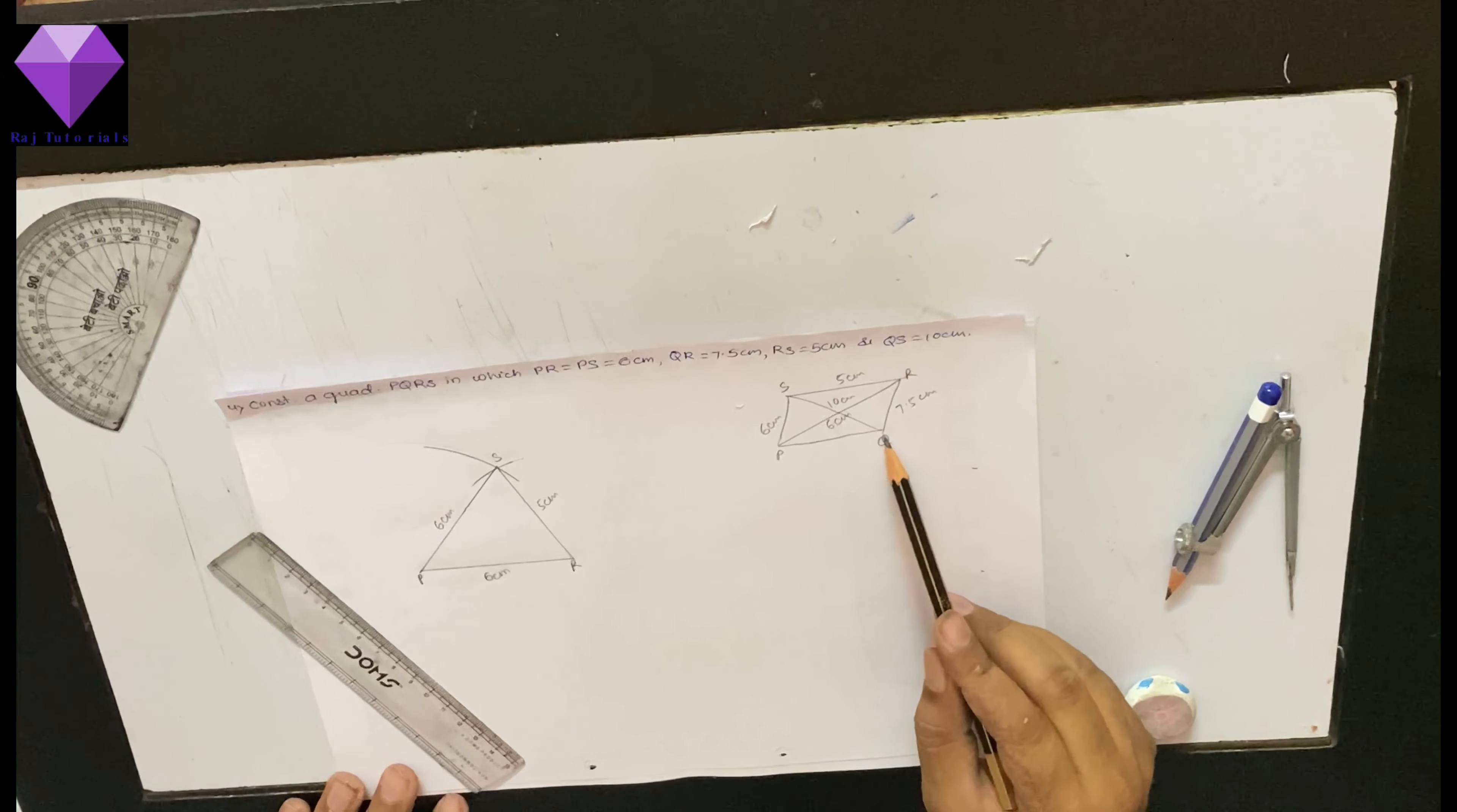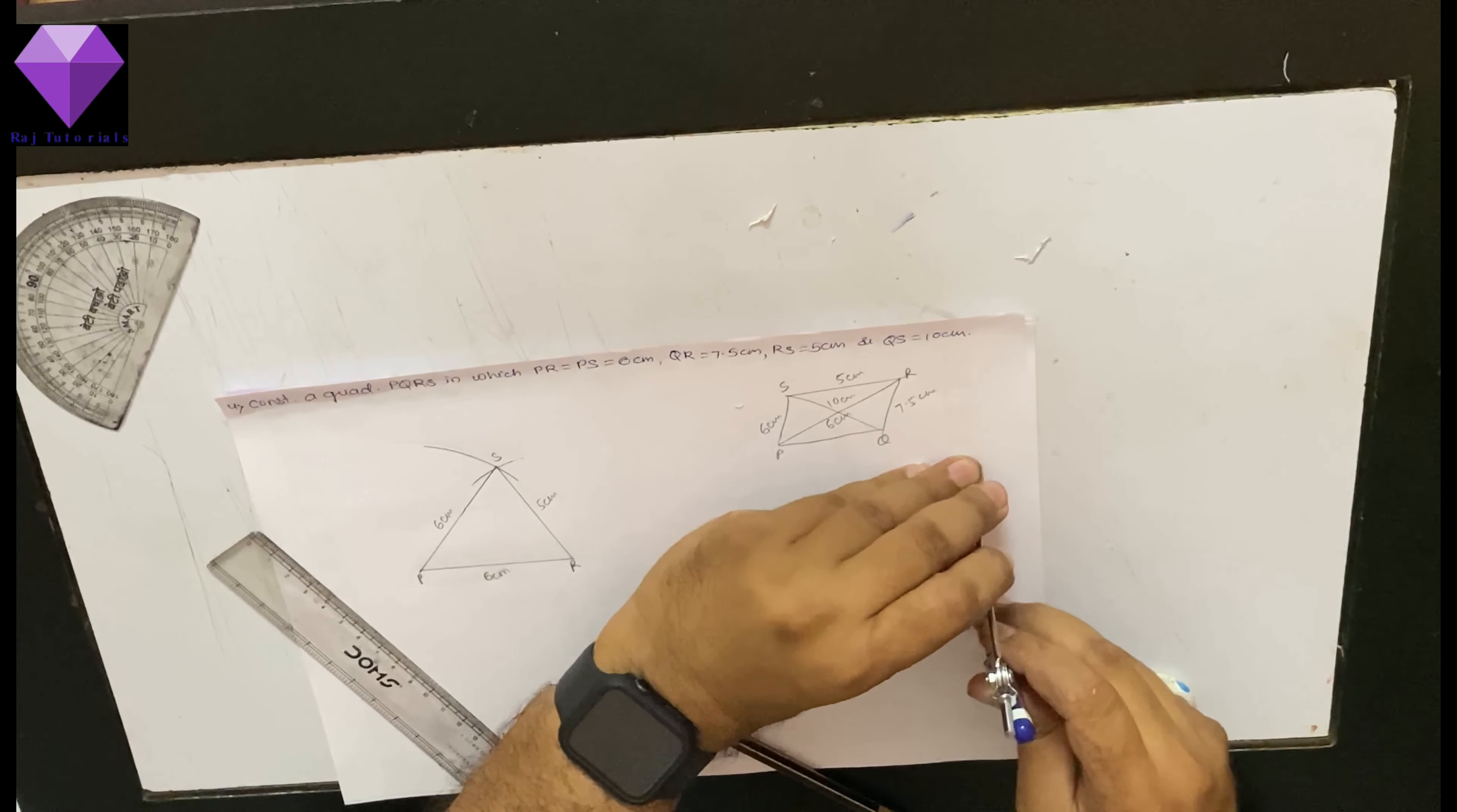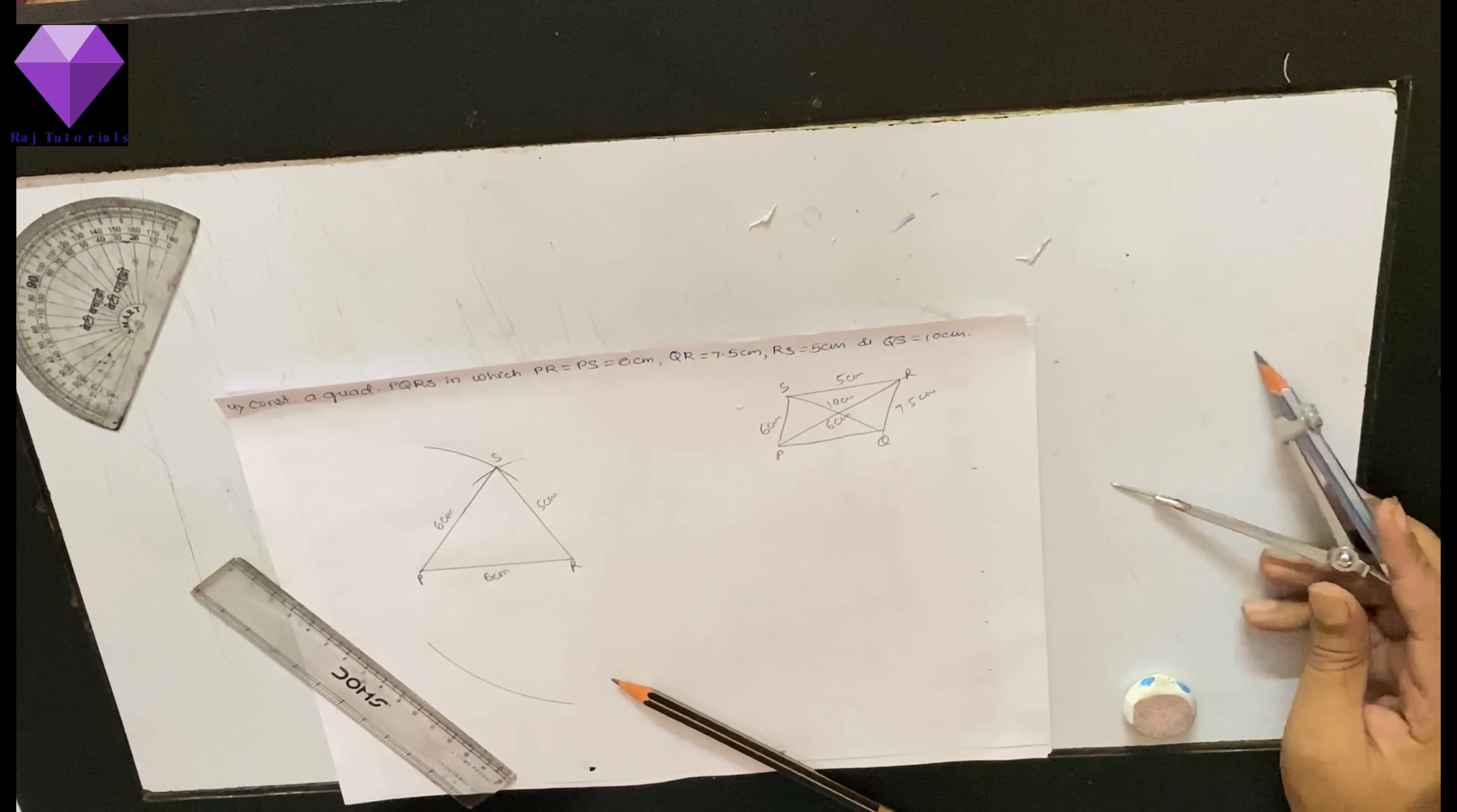Now, I need Q point. With R's center and radius 7.5 cm, I have to draw one arc. So, with R's center and radius 7.5 cm, I am making one arc.